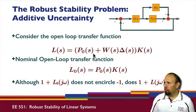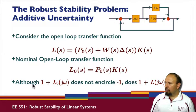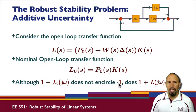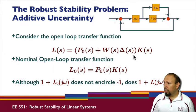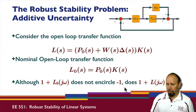Consider now the nominal open loop transfer function and we look at the quantity 1 plus L0 of j-omega. Because we've chosen a stabilizing controller, this quantity does not encircle the minus one point — that comes from the Nyquist criterion. We know that the controller stabilizes the nominal system, so the question is: does it stabilize the actual system, the system with the uncertainty?